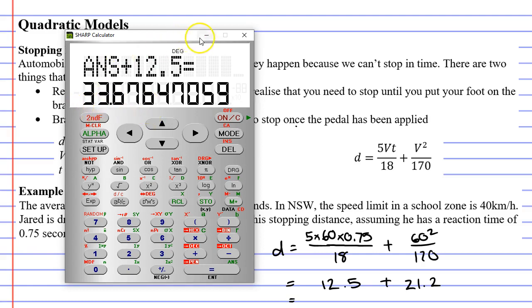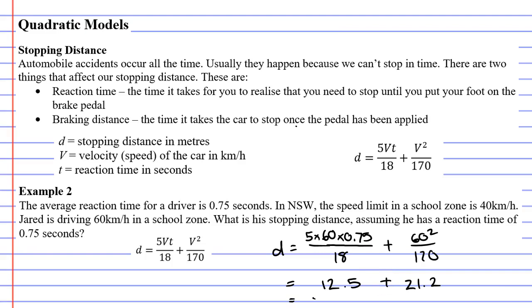And I get 33.676. So we'll say 33.7 and we'll write M for metres next to it. So the stopping distance of Jared would be 33.7 metres.